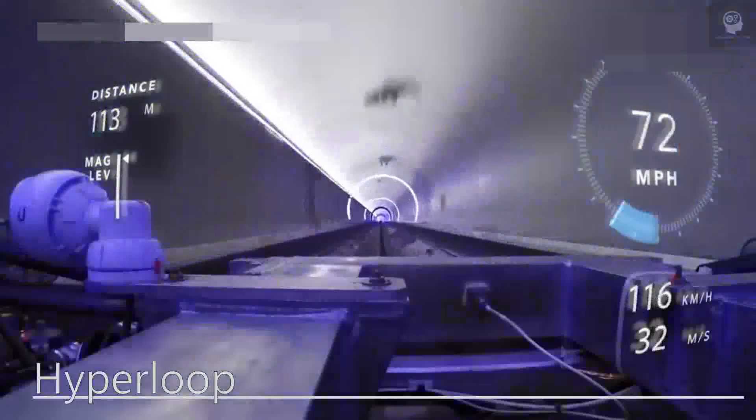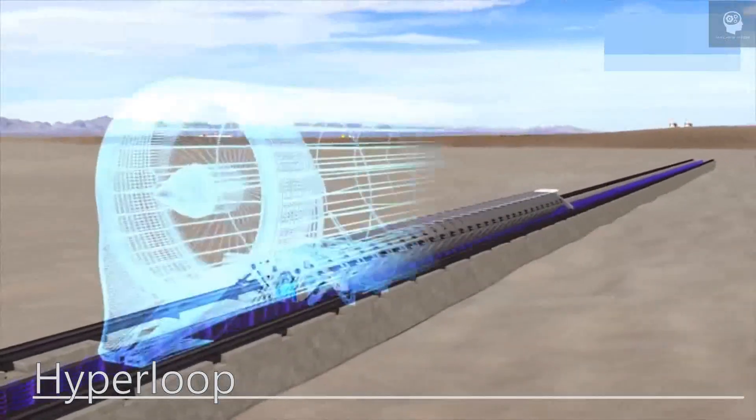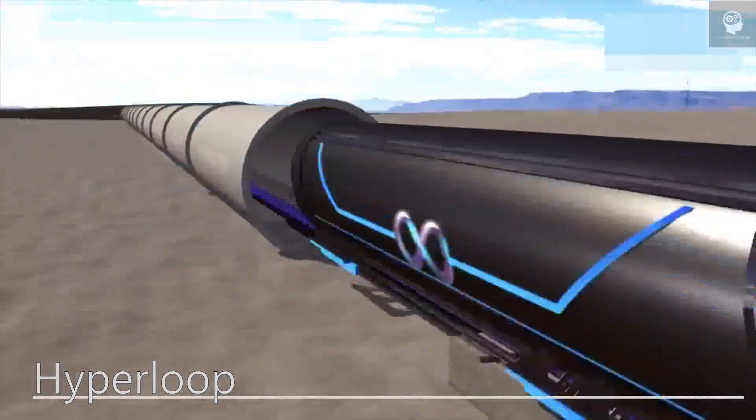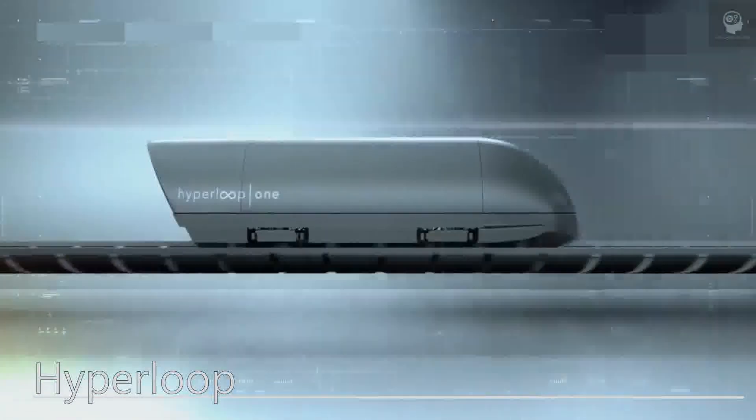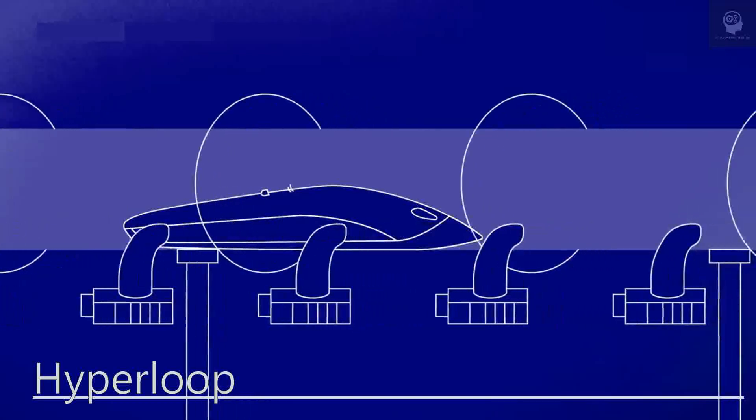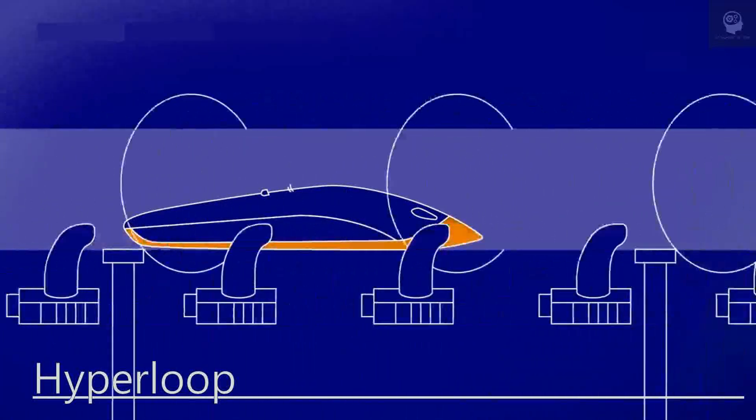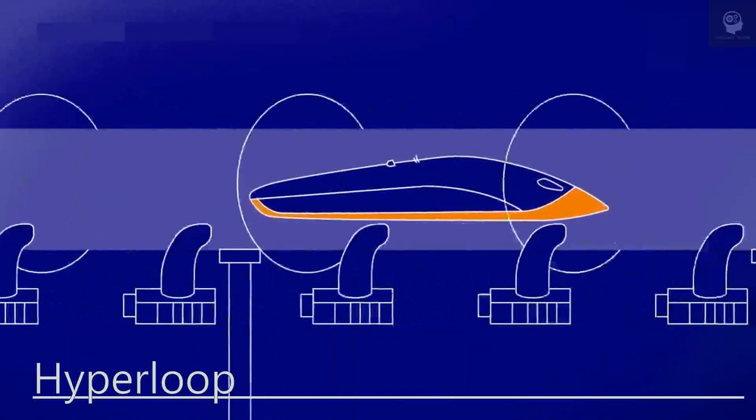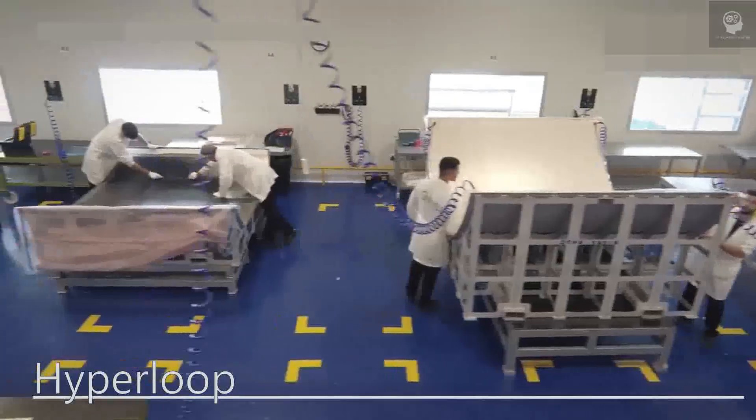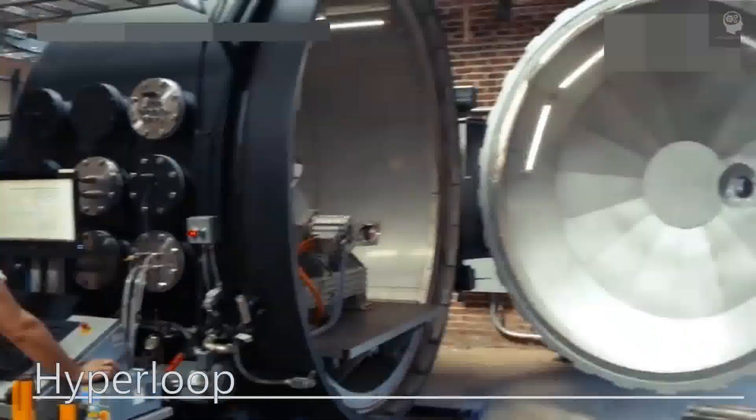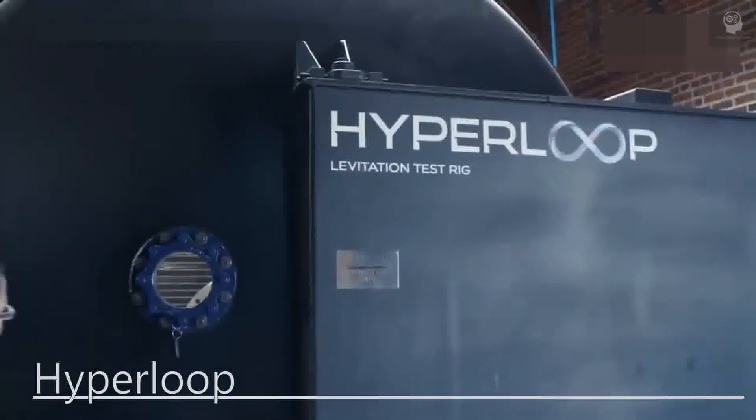Increased accessibility through hyperloop technology could make it easier for people to access remote areas or places that are difficult to reach by traditional modes of transportation. For example, a hyperloop system in India could connect rural communities with urban areas, providing access to jobs, healthcare, and education.